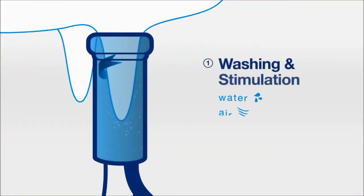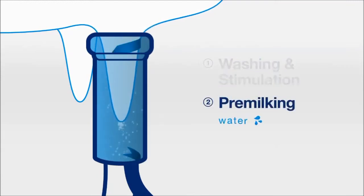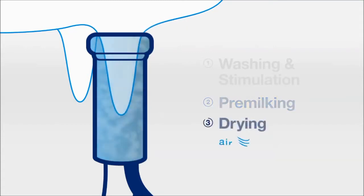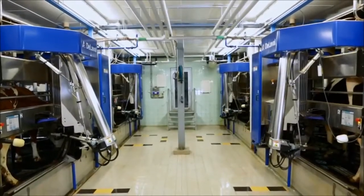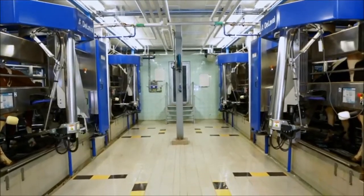Each teat is gently cleaned with alternating warm water and air. The teats are well stimulated, pre-milked, and dried before milking. This gentle but thorough teat preparation leads to higher milk flows, shorter milking time, excellent udder health, and best milk quality.